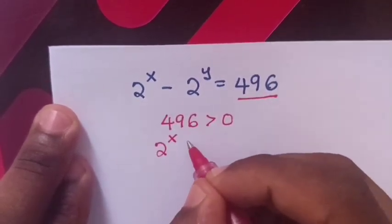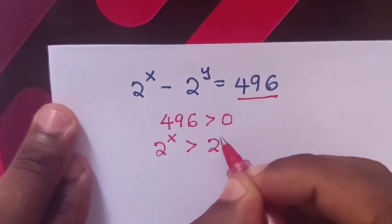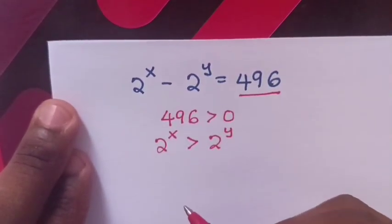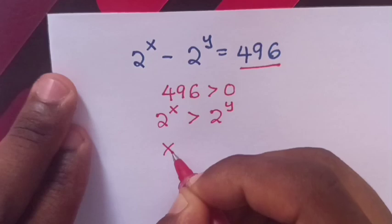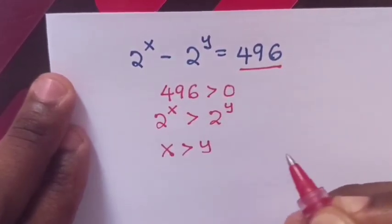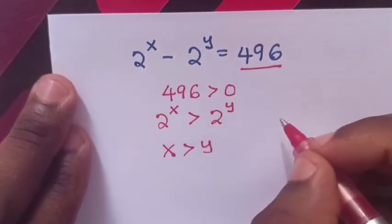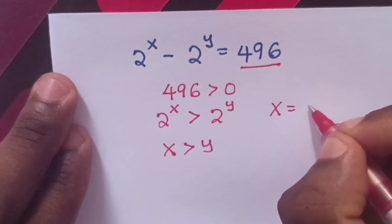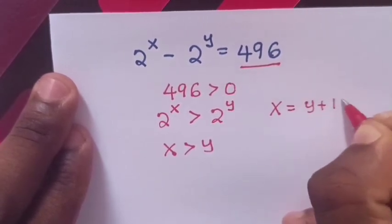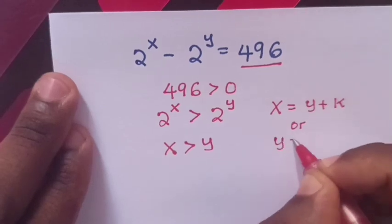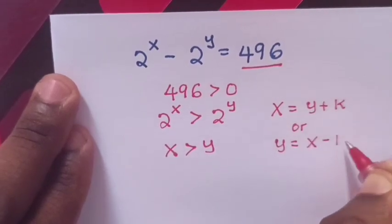2 power x is greater than 2 power y to get a positive value of 496. Since 2 power x and 2 power y have the same base, x is greater than y. If x is greater than y, it means x equals y plus k, or y equals x minus k.